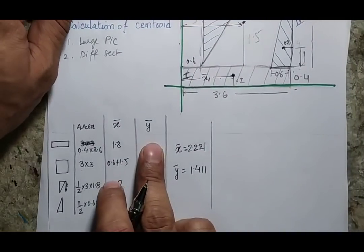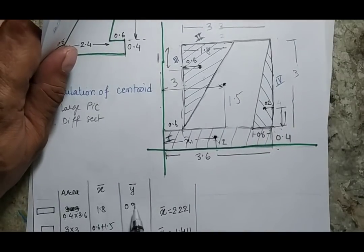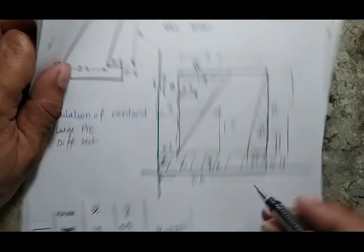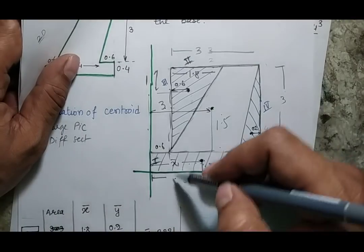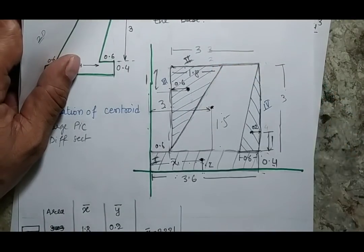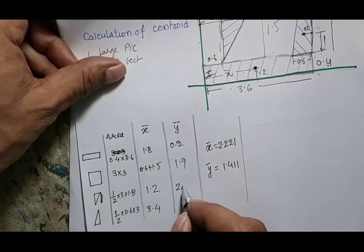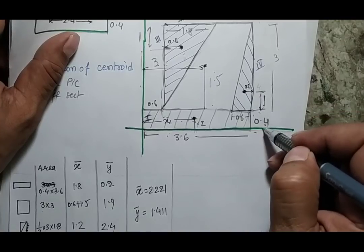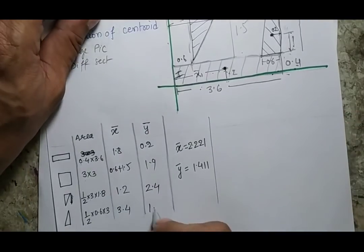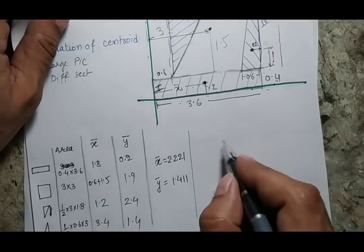For the y-bar centroidal positions: section 1 gives y1 = 0.2; section 2 (large rectangle) gives y2 = 0.4 + 1.5 = 1.9. For triangle 3, the total height is 3 + 0.4 = 3.4, and the centroid is 1 from the top, so y3 = 3.4 − 1 = 2.4. For triangle 4, the centroid is 1 + 0.4 = 1.4 from the base, so y4 = 1.4.